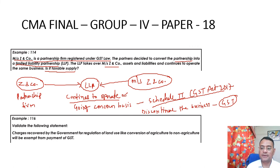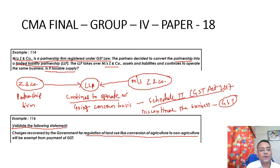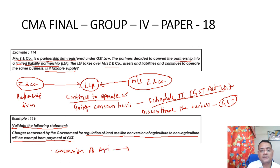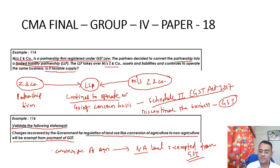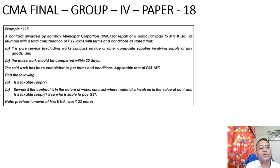Next: validate the following statement - charges recovered by the government for regulation of land use, like conversion of agriculture to non-agriculture land, will be exempt from payment of GST. Please note that charges recovered by government for conversion of agricultural land to non-agricultural land are exempted under GST, and no GST would be charged by the government.